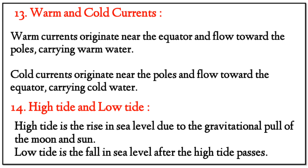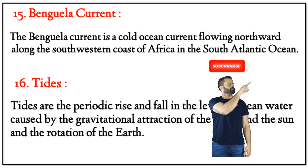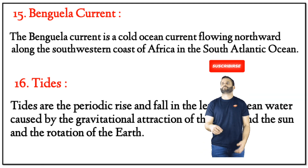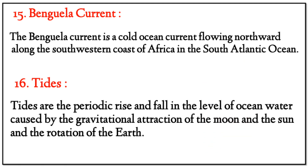Low tide is the fall in sea level after the high tide passes. Question 15 — Benguela Current: The Benguela Current is a cold ocean current flowing northward along the southwestern and southern coast of Africa in the South Atlantic Ocean. Question 16 — Tides: Tides are the periodic rise and fall in the level of ocean water caused by the gravitational action of the moon and the sun and the rotation of the earth.